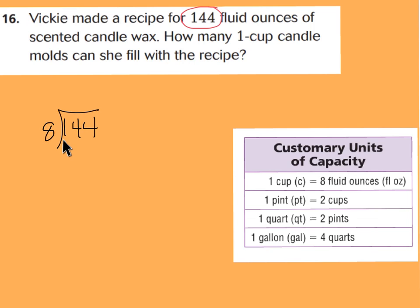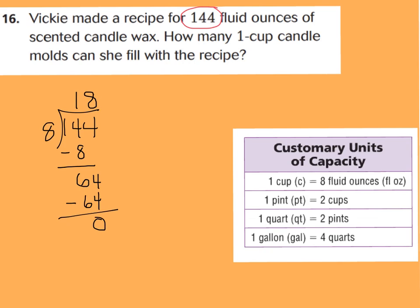Let's do the math: 144 divided by 8. We have 1 in the hundreds place — can't give 100 to each of 8 groups. Looking at 14 tens, each group can have 1 ten, so put 1 in the tens place. 1 times 8 is 8; subtract: 14 minus 8 is 6. Bring down the 4 ones to get 64 ones. Since 8 times 8 is 64, put 8 in the ones place. 8 times 8 is 64, remainder zero. So 18 cups can be made with 144 fluid ounces.